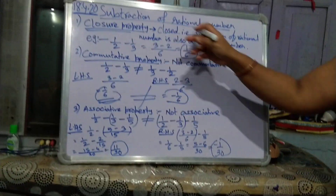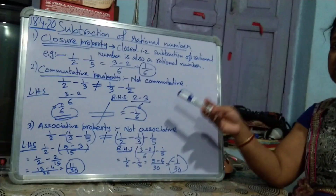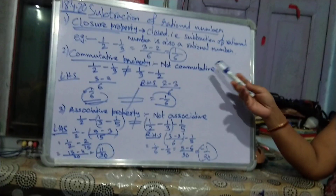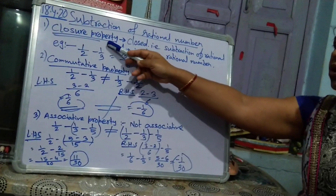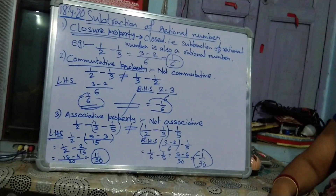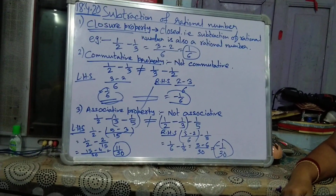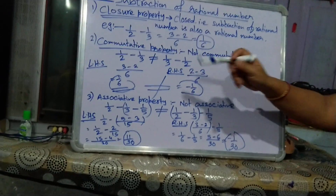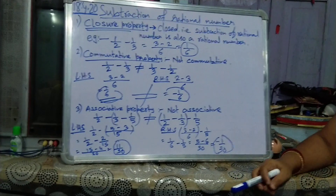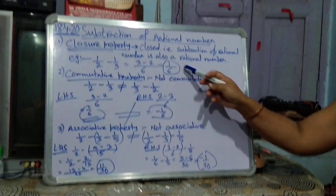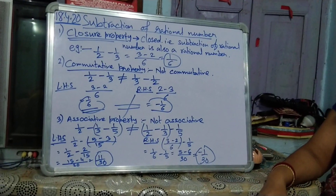So subtraction of rational numbers — as we have done in addition, the closure property, associative property, commutative property — similarly in subtraction of rational numbers, closure property is also there. Closure property means subtraction is closed. That means if we subtract 2 rational numbers, the difference is also a rational number. That is called closure property.